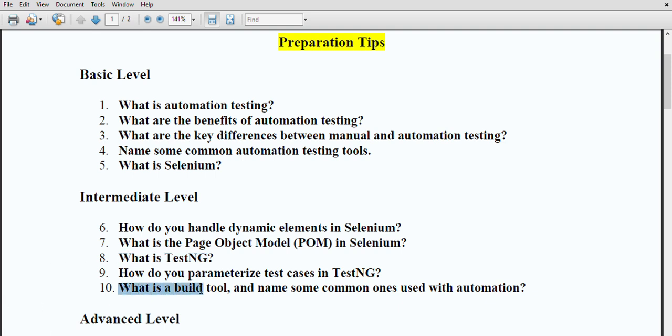What is a build tool and name some common ones used in automation? Some build tools automate the process of compiling, testing, and packaging the code. Common tools include Maven, then Gradle and Ant are some build tools which are famous. You can remember the names of these tools and also go through these particular tools as well. Most of the videos and data are available on the internet. If you want, I will make videos on these particular tools as well.